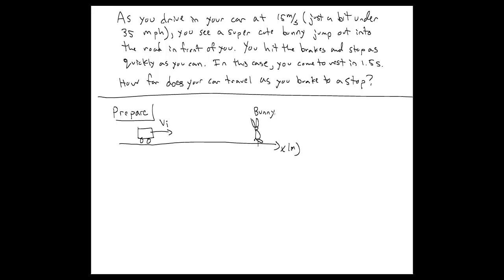Before we go on, we need to label some things that we know. We can label the initial position and the initial time of the car. At some point the car is going to stop, so here's our car when it has stopped — at some final position and some final time. Since we were initially moving to the right and have now stopped, we know there is some acceleration pointing to the left.